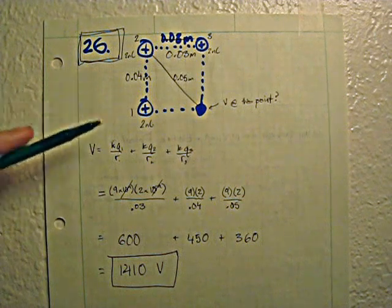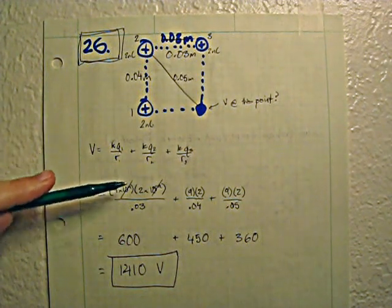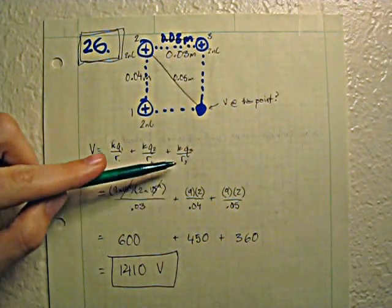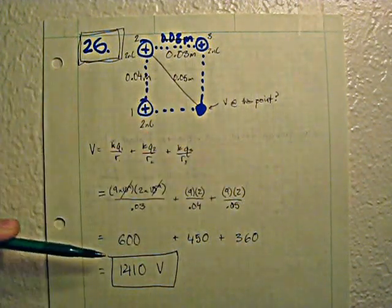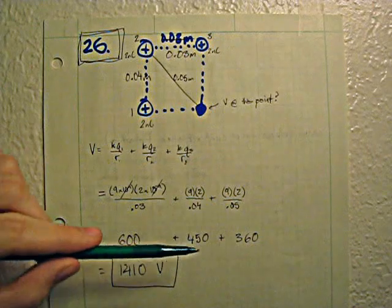And then you divide it by each distance. So it's 18 over 0.03 plus 18 over 0.04 plus 18 over 0.05. And when you add those, it's 600 plus 450 plus 360.